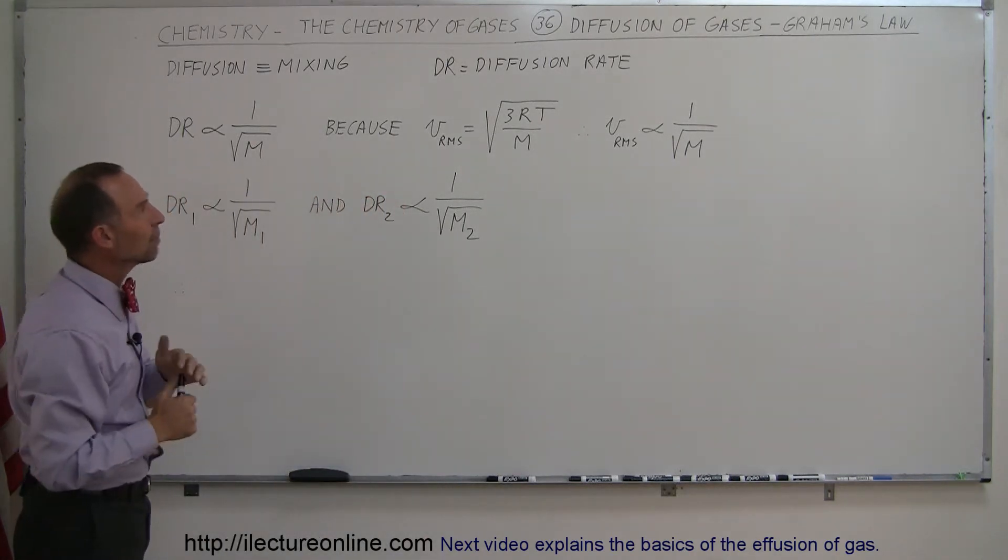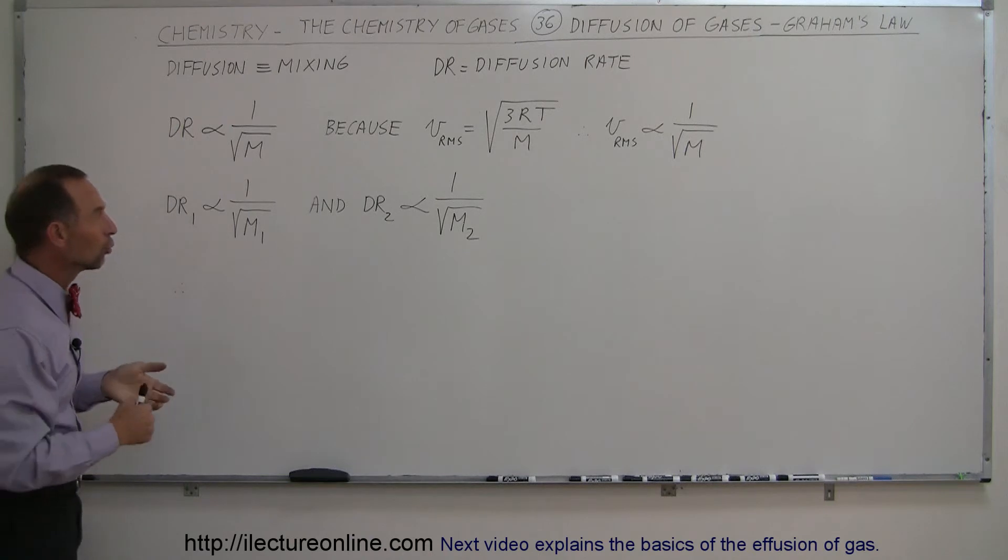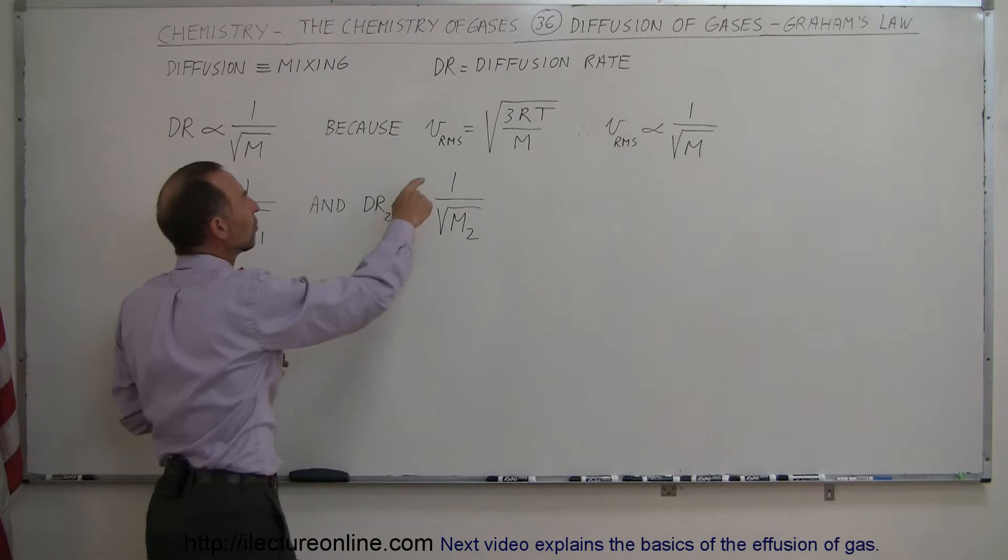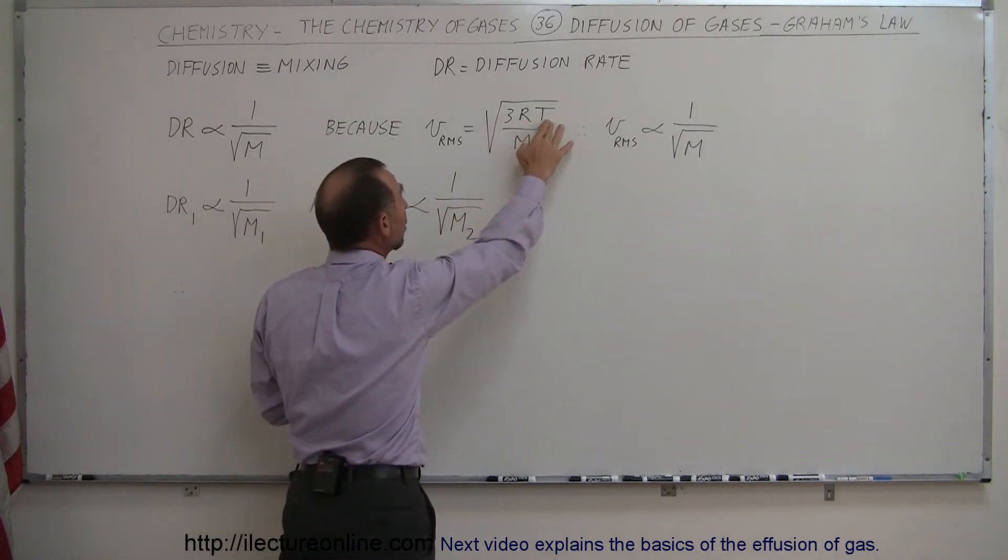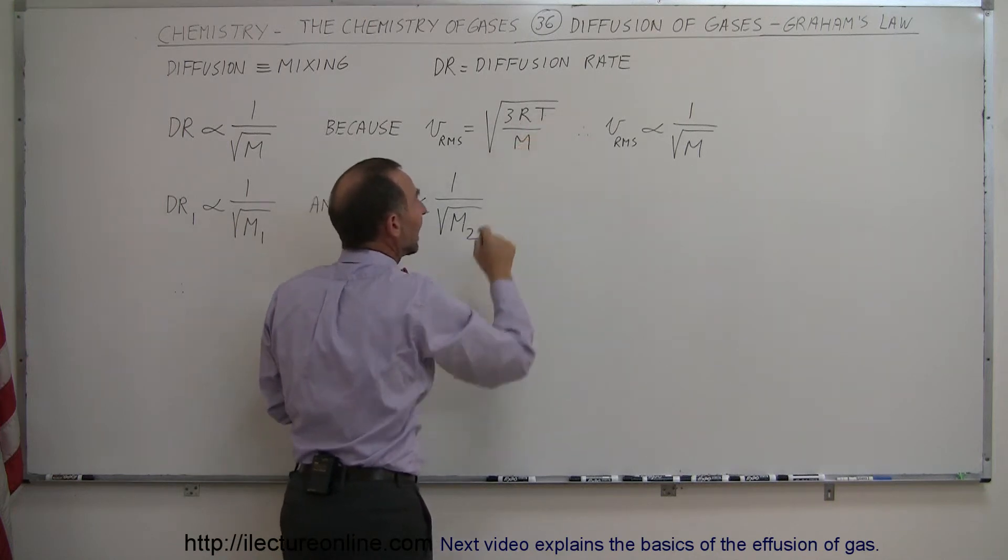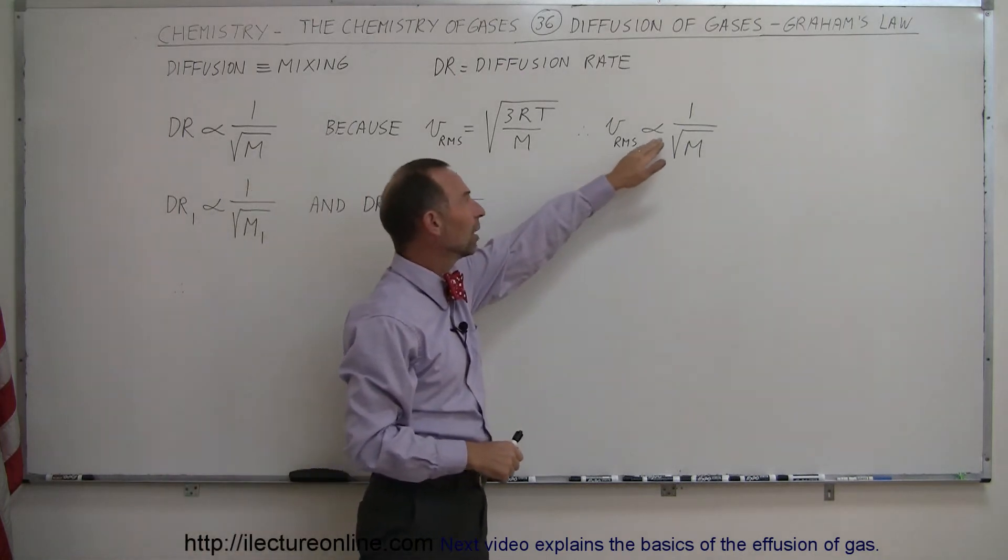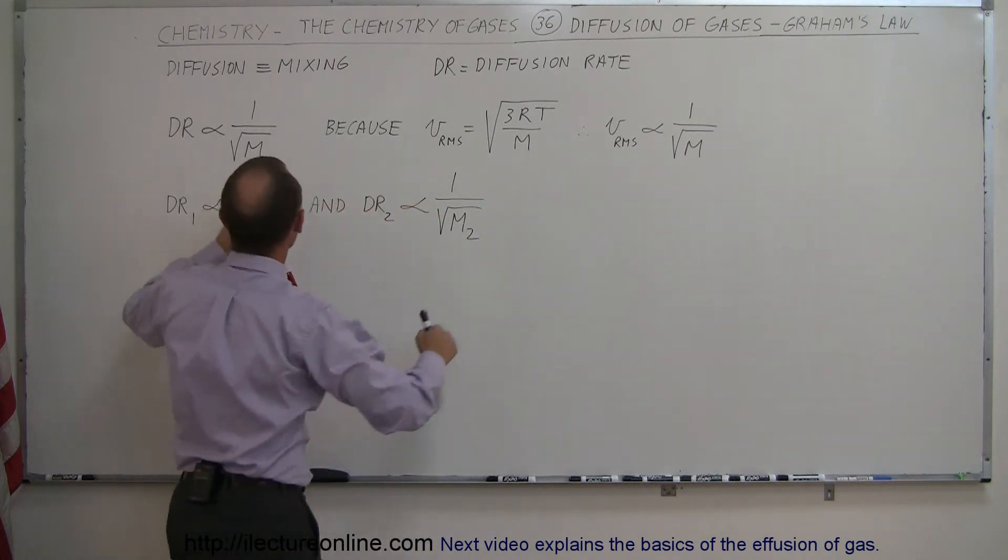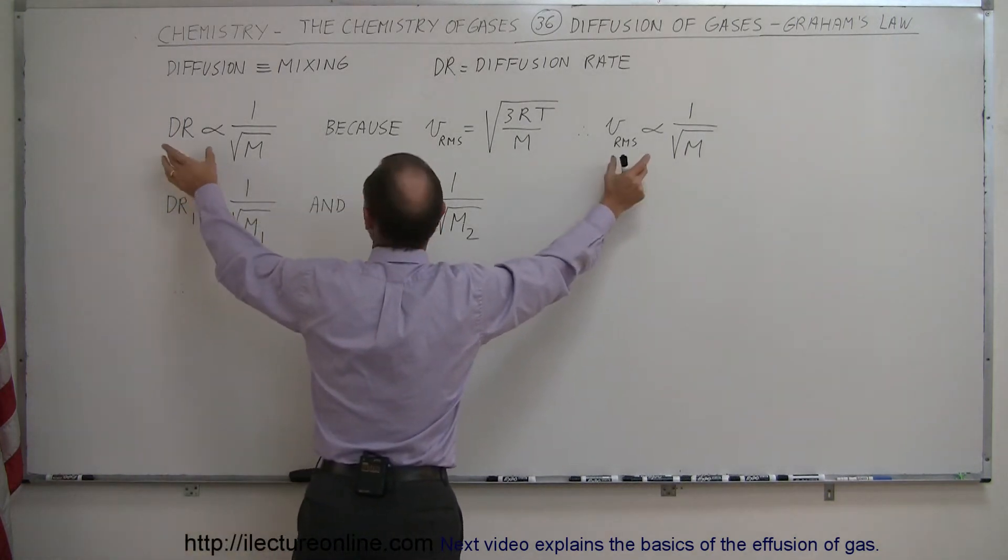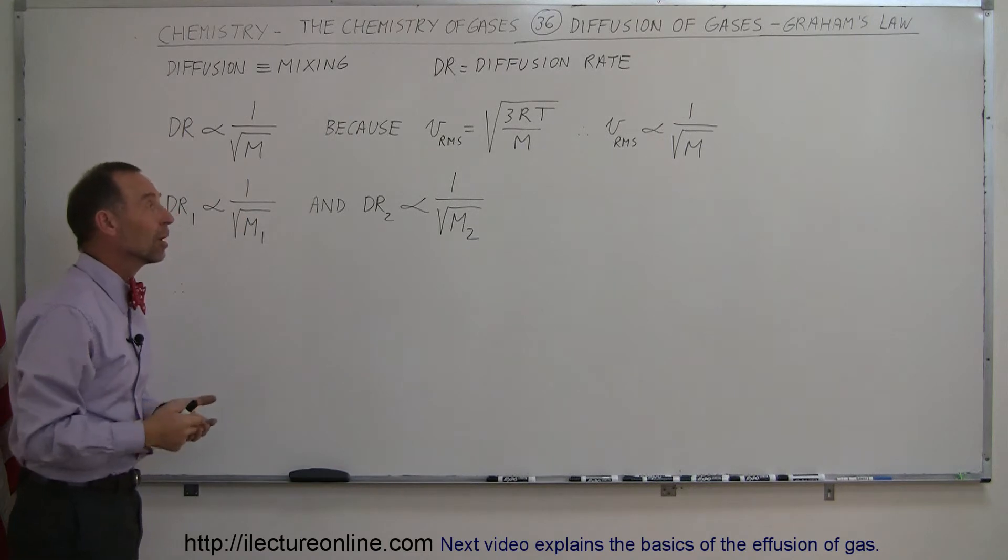And what Graham noticed was that the diffusion rate was proportional to one over the square root of the mass of these molecules, or the molar mass of the gas. And the reason for that is because the vRMS, the representative velocity of molecules, is equal to the square root of 3RT over M, where R is a constant, T is the temperature, and M is the molar mass of the molecules. So therefore the RMS velocity was inversely proportional to the square root of the mass. Notice the similarity right here. That's why the diffusion rate was directly caused by the RMS velocities, which was caused by the mass of the molecules.